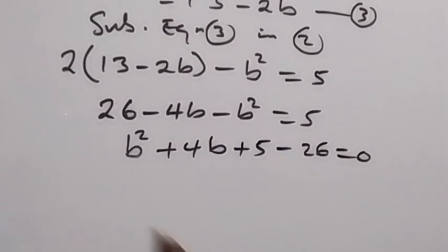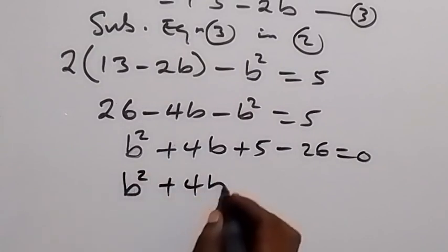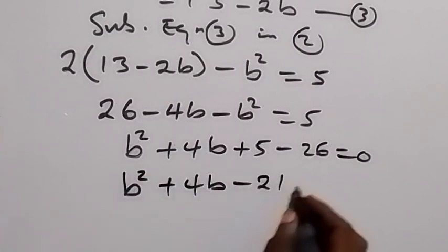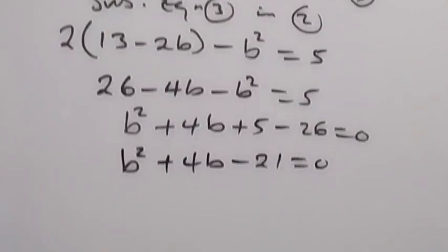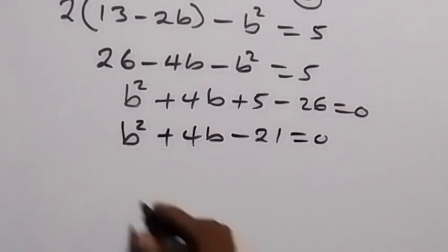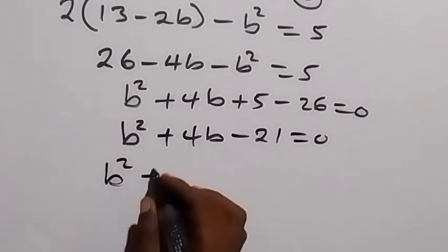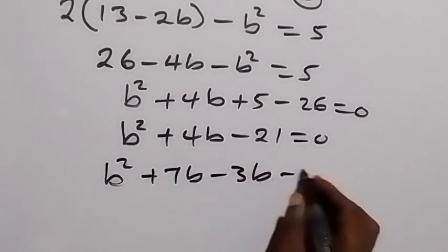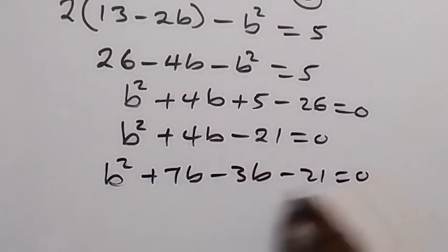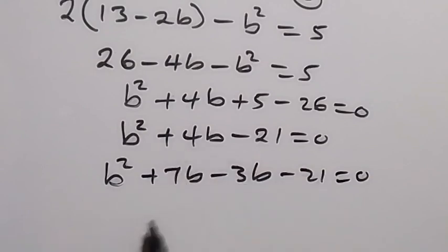This can be written as b squared plus 4b minus 21, which equals 0. This forms a quadratic equation that we can factorize. It becomes b squared plus 7b minus 3b minus 21 equals 0. When we sum the middle terms we get plus 4b, and when we multiply they give minus 21.